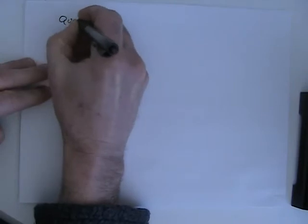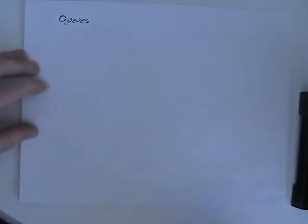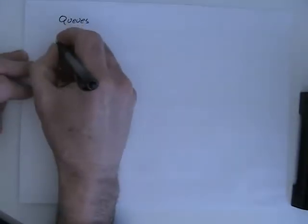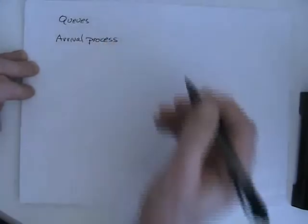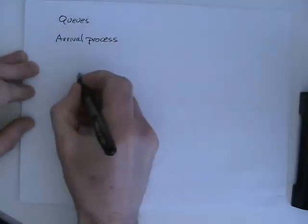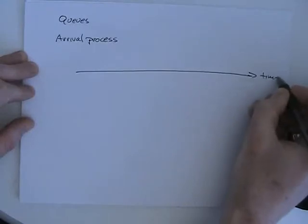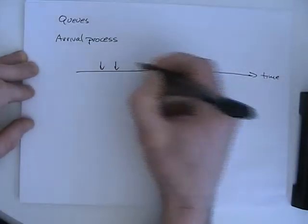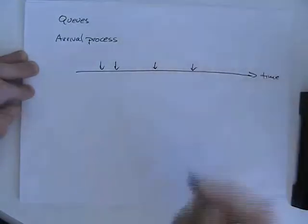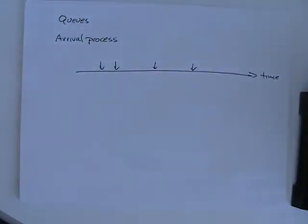First, we'll talk about queues, and to introduce them, we'll first talk about an arrival process. That's just a fancy name for events that happen at instants in time — requests to a web server, packets arriving at a switch, requests for disk blocks, something like that.